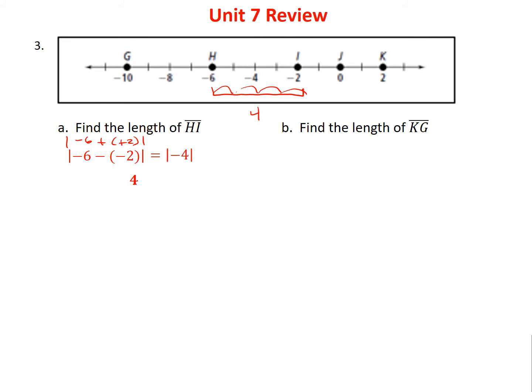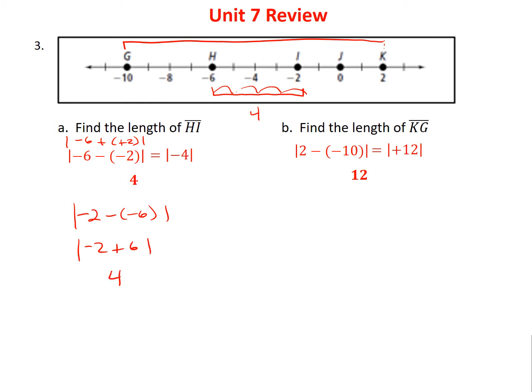For part B, finding the distance between K and G: 2 - (-10) = 2 + 10 = 12. Notice the order doesn't matter — doing it the other way gives |-2 - (-6)| = |-2 + 6| = |4| = 4 for the same segment, confirming the same answer. That's why we use absolute value — we always want positive distance.